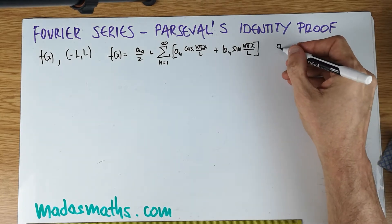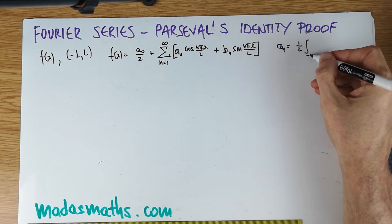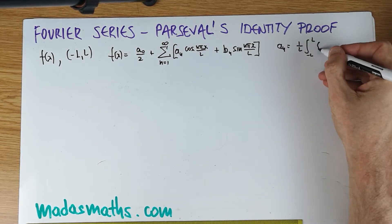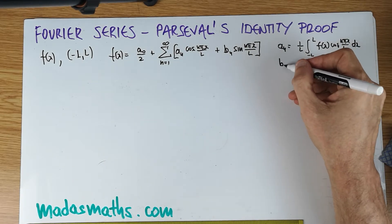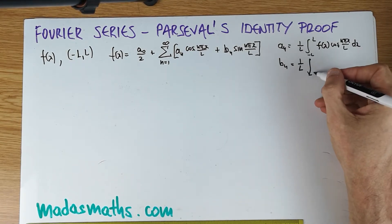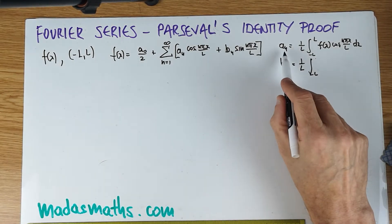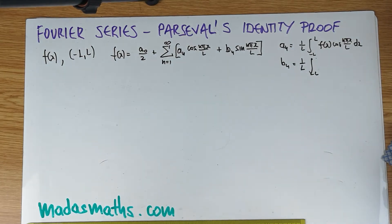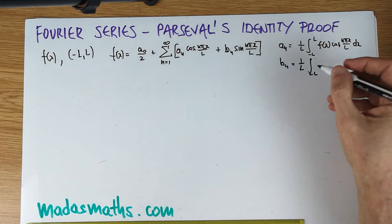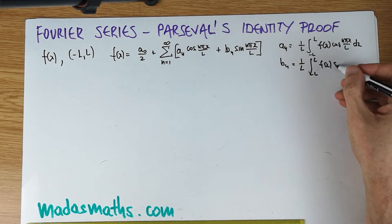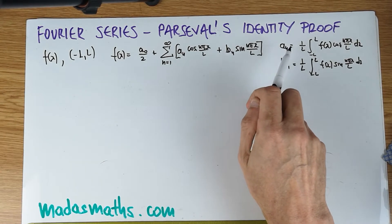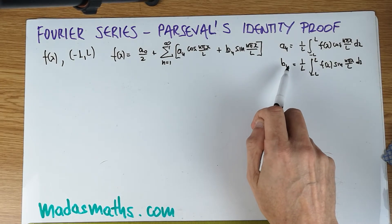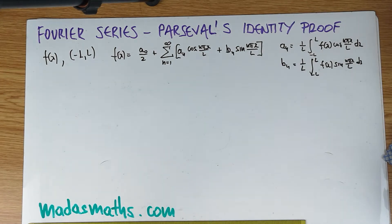Where a_n is the integral 1 over l from minus l to l of f of x times cos(n*pi*x/l) dx. And this is, of course, the b_n with sine instead. These are the quantities here. The a_n's run from n equals 0, so there's an a_0, a_1, a_2, a_3, and so on, while the b_n's, there is no b_0. It starts from n equals 1 and so on.